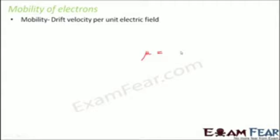Now let's quickly talk about the mobility of electrons — how mobile is the electron, how much can it move? Mobility of an electron is drift velocity per unit electric field. Mobility is generally denoted by mu. So mu equals drift velocity per unit electric field. The unit to measure mobility is meter squared per volt-second.